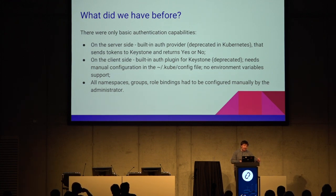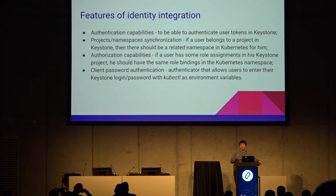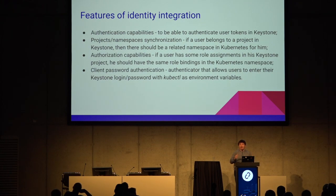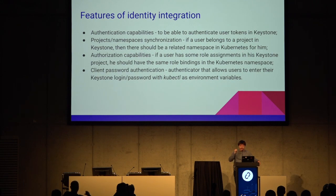Now I want to say what we have done to improve the situation. All work was done in cloud-provider-openstack, a sub-project under Kubernetes governance which contains many useful things to help integrate both systems together. It's not just about identity — it also helps projects like Cinder or Octavia and many others.